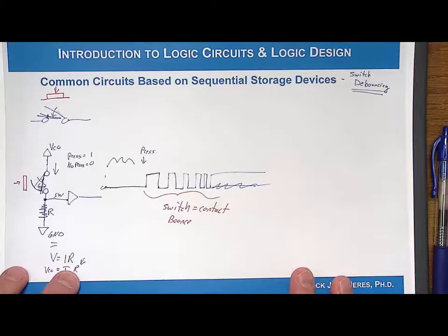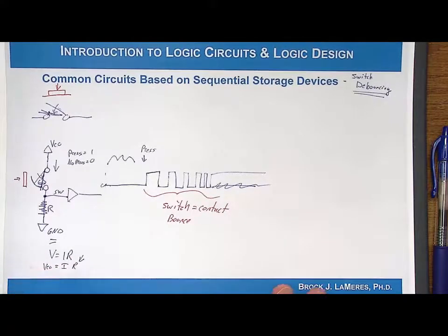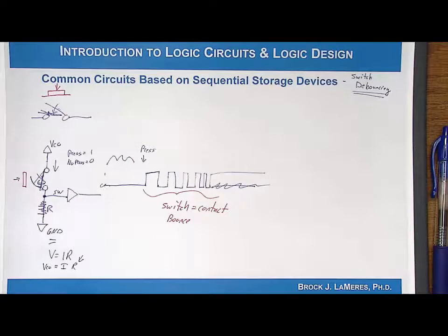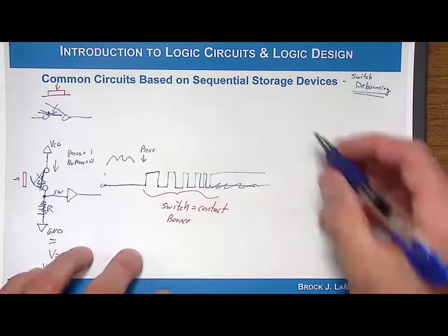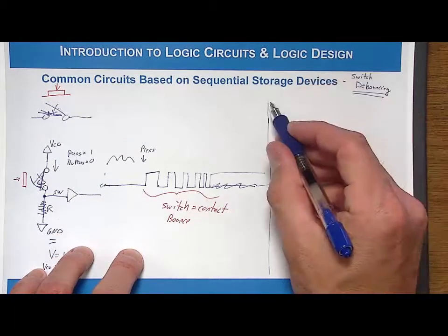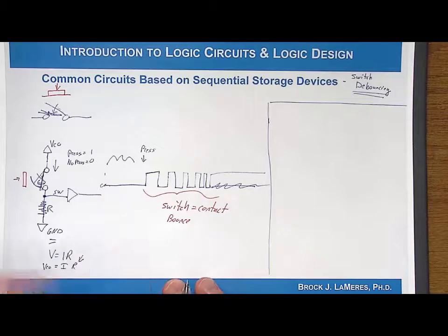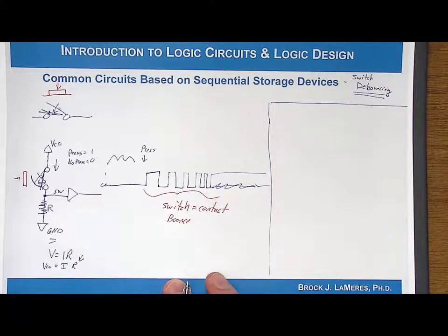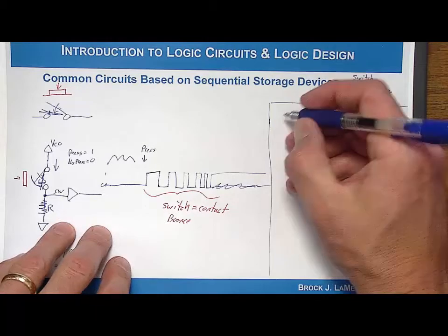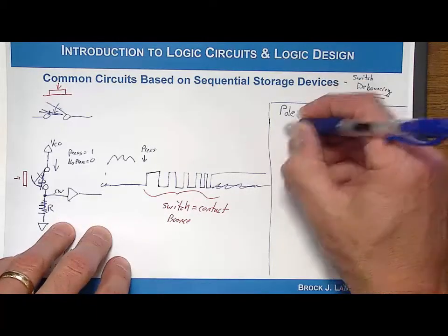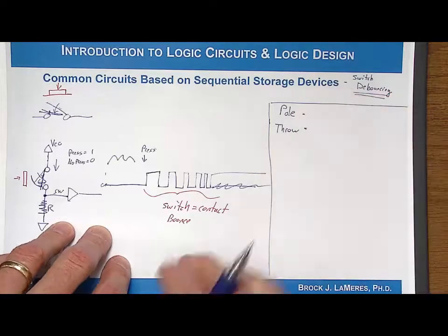How do we use sequential logic storage devices to solve this? It turns out the solution applies to one particular type of switch. To understand which one, let's quickly define the types of switches. Switches are defined using two terms: poles and throws. A pole is the number of separate circuits controlled by the switch.